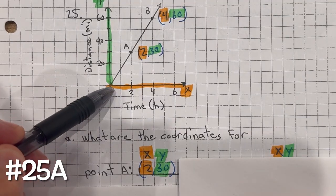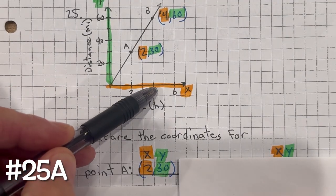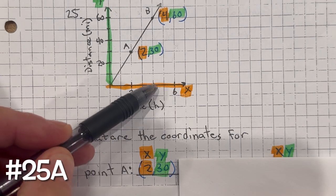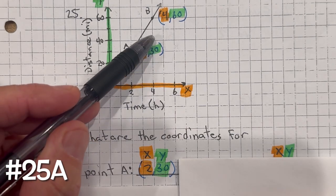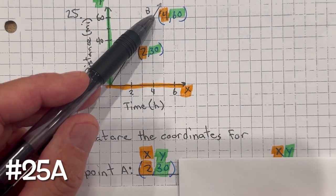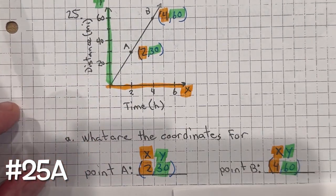Point B: counting 1, 2, 3, 4 on the x-axis, and 10, 20, 30, 40, 50, 60 on the y-axis. So point B is (4, 60).